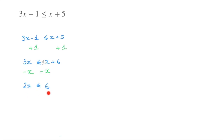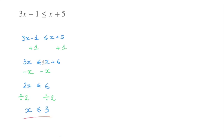We're now faced with a much simpler inequality. We can see that x is being multiplied by 2 on the left hand side, so to get rid of that 2 we divide the left hand side by 2, and we must do the same on the right hand side. So 2x divided by 2 leaves us with x, less than or equal to 6 divided by 2, which leaves us with 3. And that's the final answer.